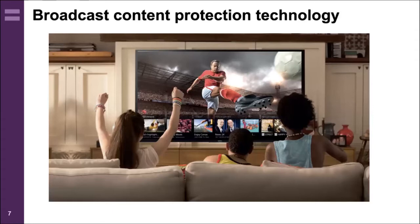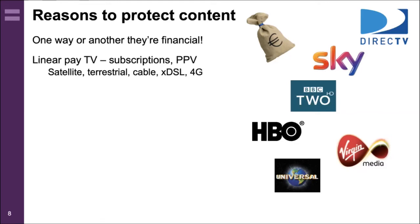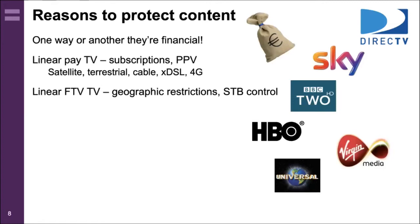We're looking at broadcast content protection going over satellite, terrestrial, or cable networks. The reasons for protecting content are really all to do with money. For linear television there are subscriptions or pay-per-view, and content goes across satellite, terrestrial, cable, DSL, 4G or 5G networks. Linear content may have a requirement for geographic restriction — for instance, the BBC didn't necessarily have the rights to transmit content across the whole of the United Kingdom. There may also be a requirement to have set-top box control.